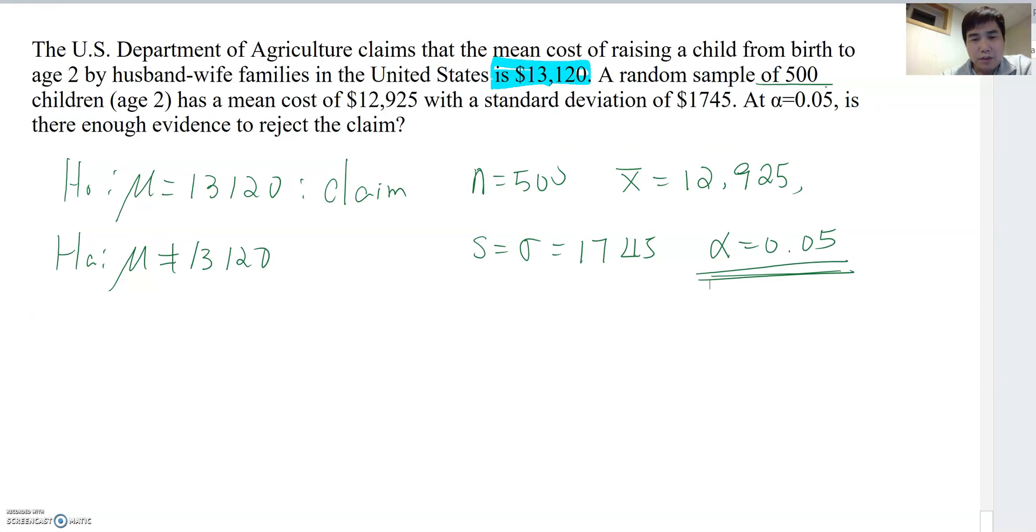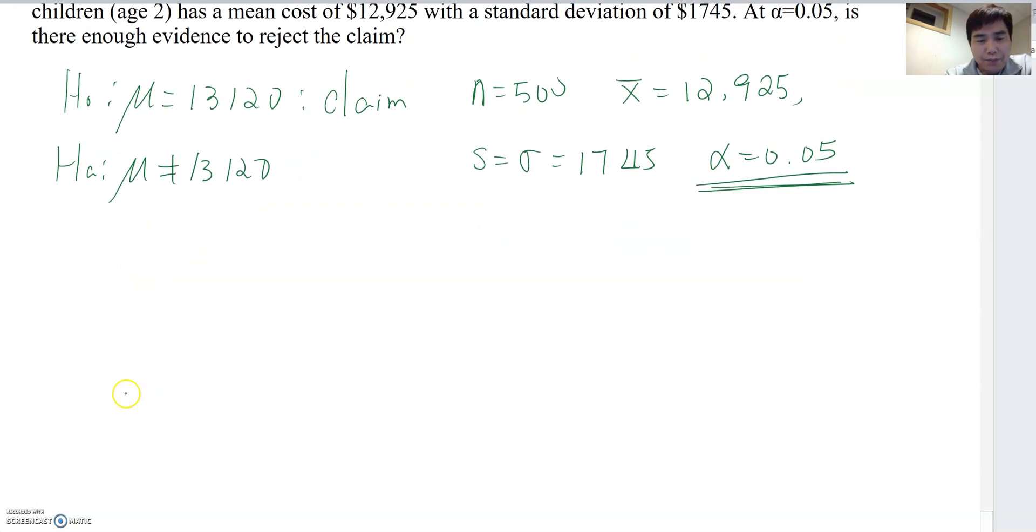Therefore, now if I drew the normal curve here, I can make this is the -1.96, and then 1.96 here. And center become H0. The 2 tail become HA. Because 2 tail, so that Z score must be both directions. One is negative. The other one is positive.